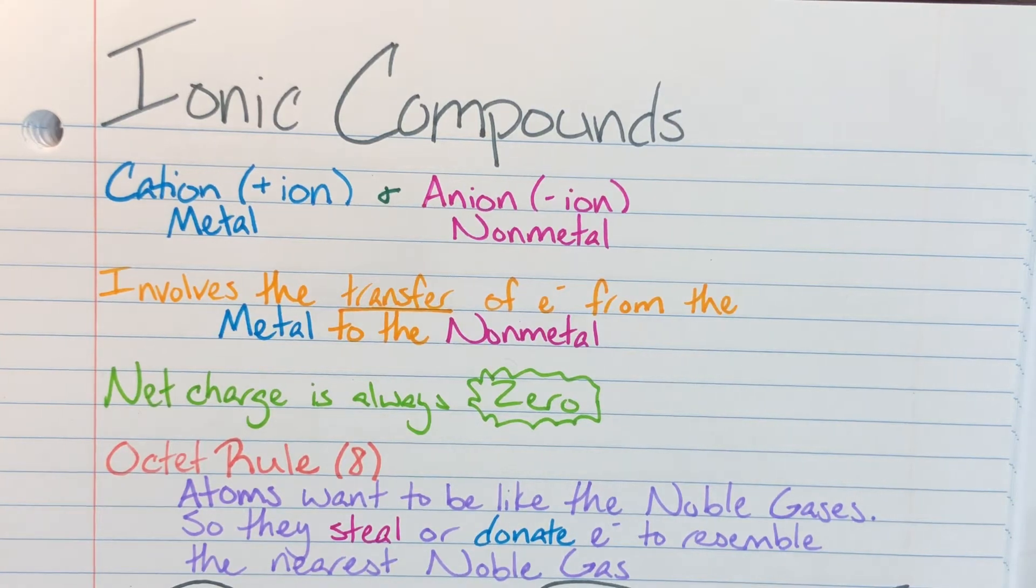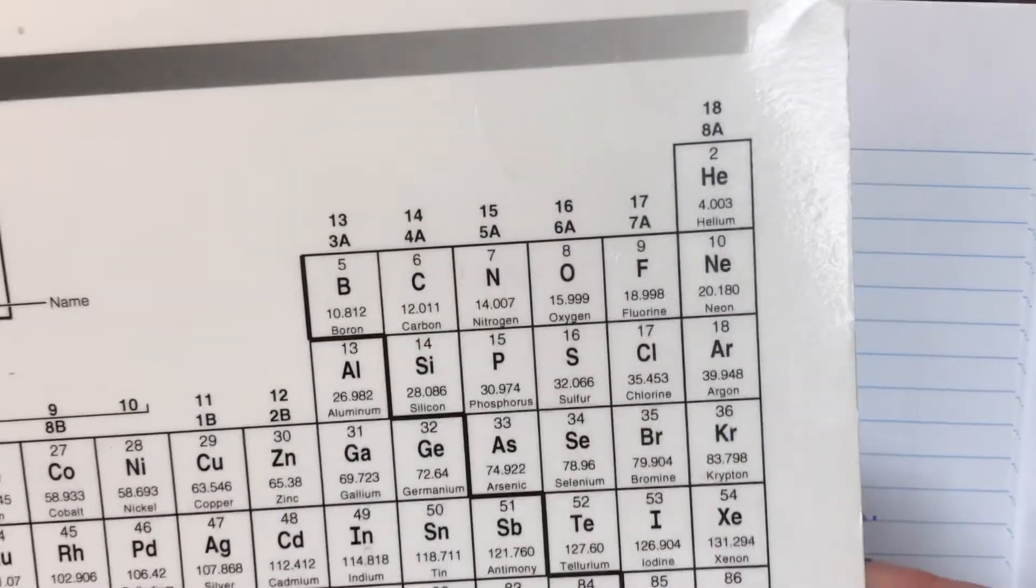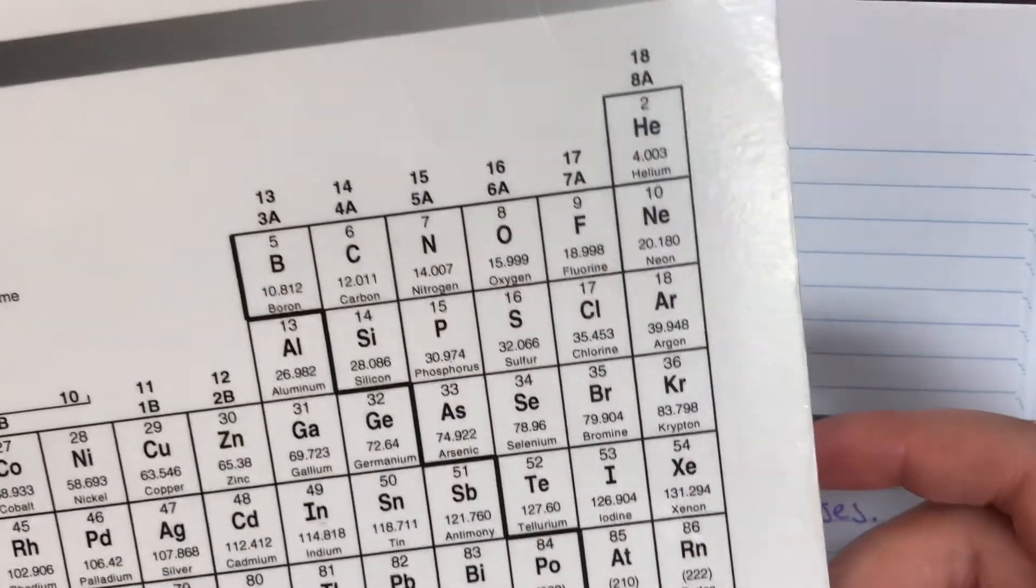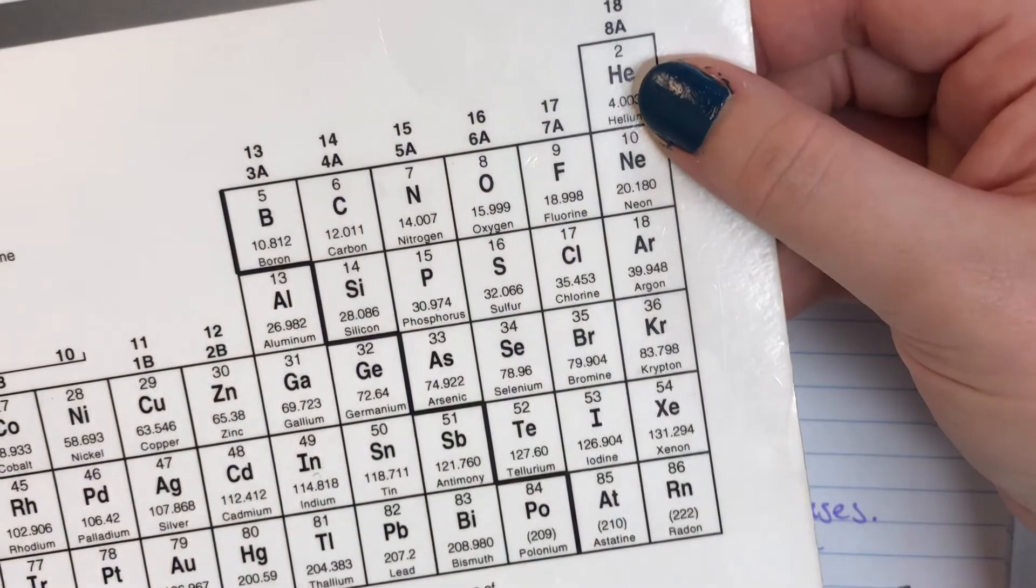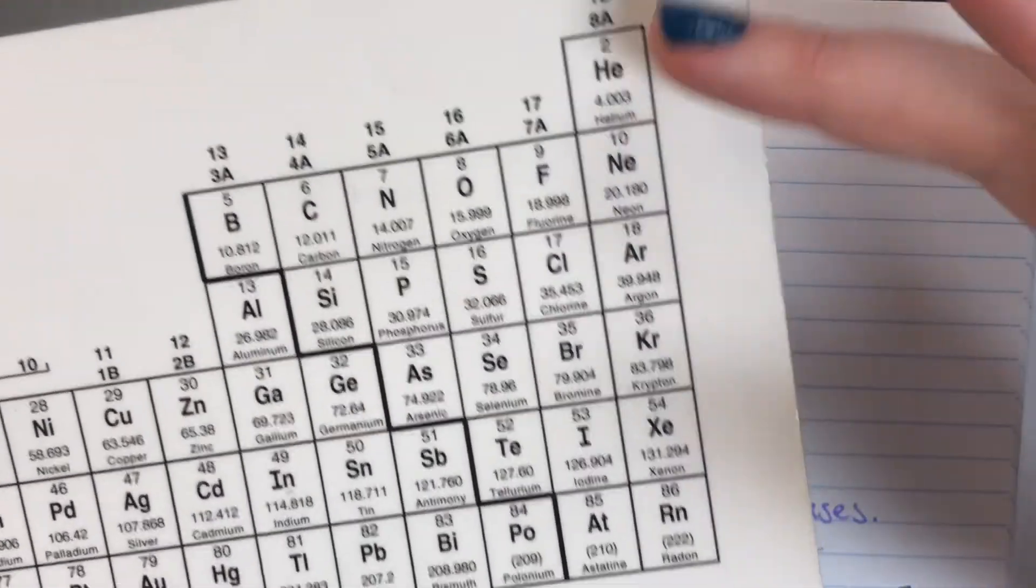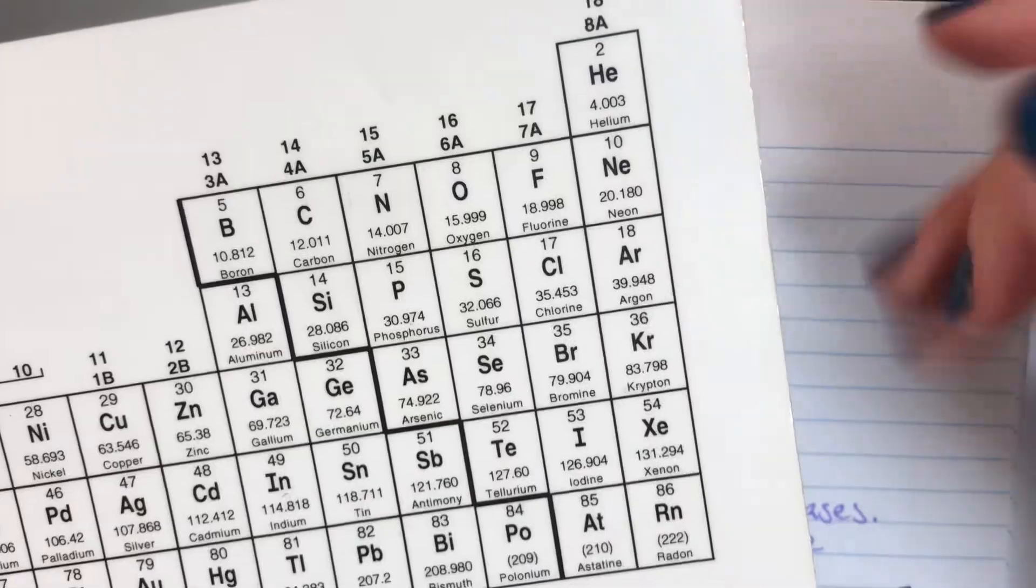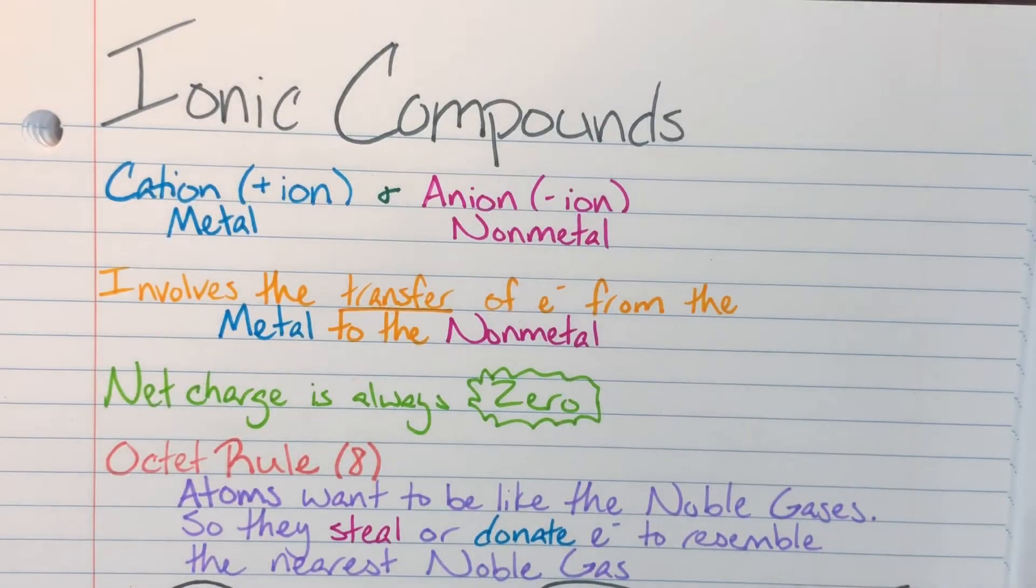Remember that my noble gases are in column 8a, which means that they have eight valence electrons with the exception of helium, who only has two. And since they have eight valence electrons, they have a complete octet. Everybody wants to become like the noble gases. So everybody is going to either steal enough electrons to have eight or they are going to donate or give away enough electrons so that they fall back to a full octet set.